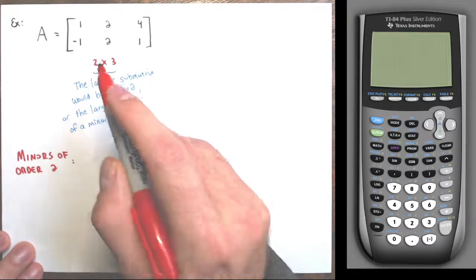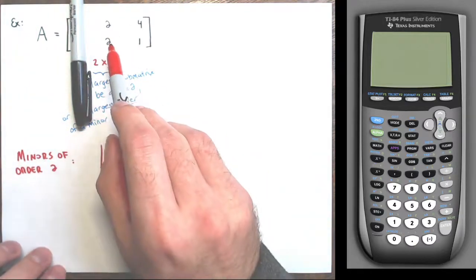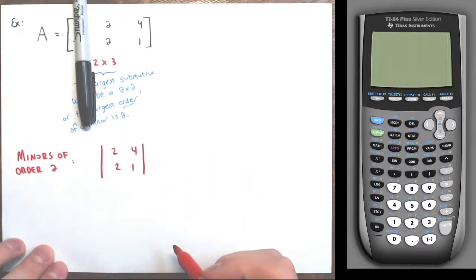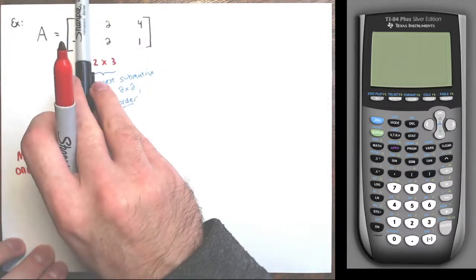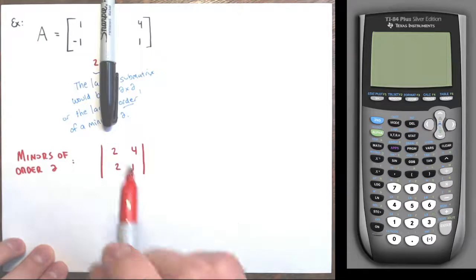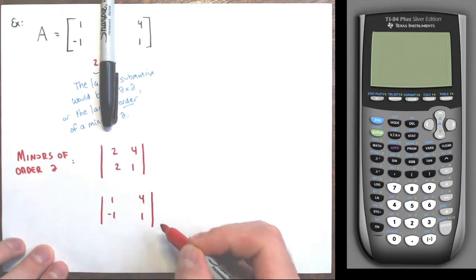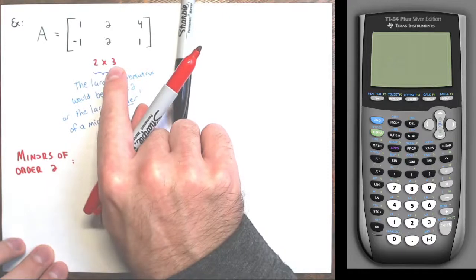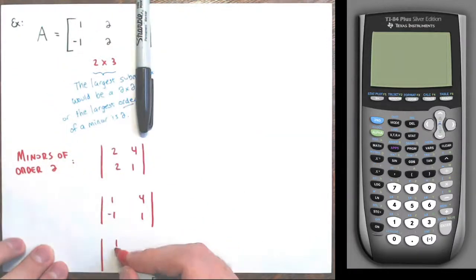If I remove the first column, I get this two by two submatrix with rows two, four and two, one — taking that determinant. If I remove the second column, here's another minor of order two with columns one, negative one and four, one — taking that determinant. And finally, removing the third column gives another two by two submatrix with columns one, negative one and two, two. Let's find these determinants.